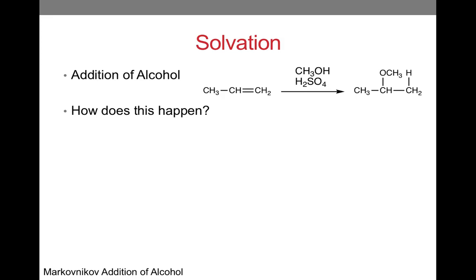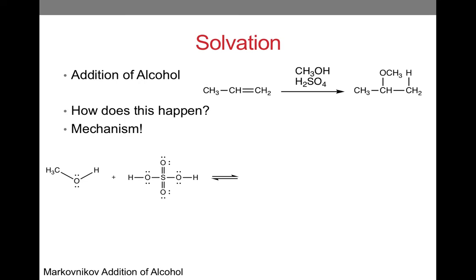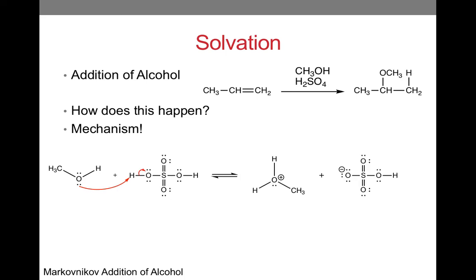The next reaction we will look at is solvation, which is the addition of an alcohol to an alkene. Notice that this requires an acid catalyst, just like in hydration. Also similar to the hydration reaction, this reaction follows Markovnikov's rule. For this example, we will see how the alcohol reacts with sulfuric acid first, and then we will go into the mechanism for the addition to the alkene. The electrons from the nucleophile will grab the electrophile, which causes the hydrogen-oxygen bond to break. We get our products, which consist of a protonated alcohol and the conjugate base of sulfuric acid. The protonated alcohol will react with the alkene, since it is electrophilic.